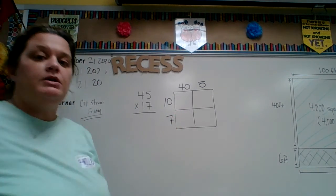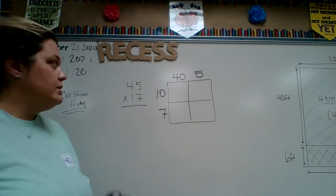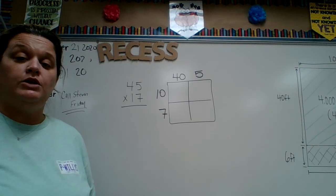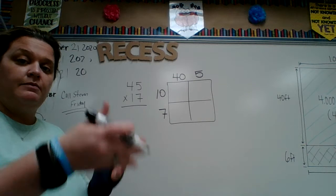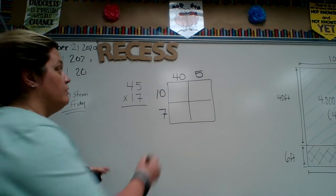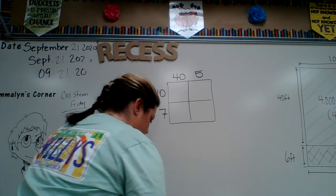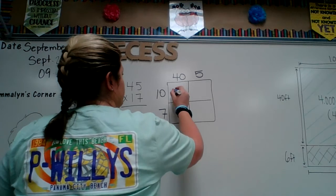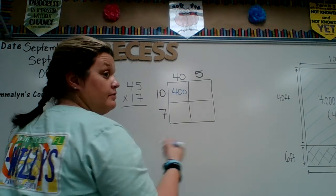Now what we do is you just multiply. Area model — when you find the area of anything, you multiply the length times the width. So area would be 10 times 40, which is 400. I'm going to do this in a different color. 10 times 5 is 50.